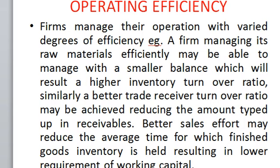Operating efficiency: firms manage their operations with varied degrees of efficiency. For example, a firm managing its raw material efficiently may manage with a smaller balance, resulting in a high inventory turnover ratio. Similarly, a better receivables turnover ratio may be achieved, reducing the amount tied up in receivables. Better sales performance efforts may also reduce the average time for which finished goods inventory is held, resulting in lower working capital requirements.